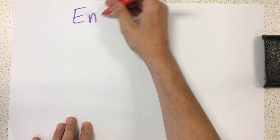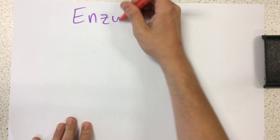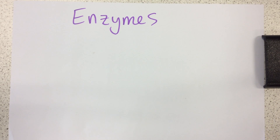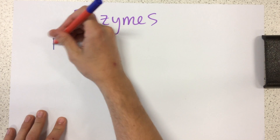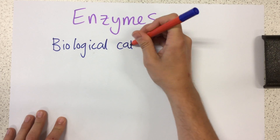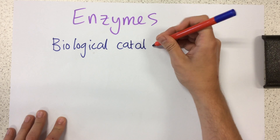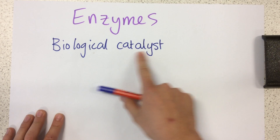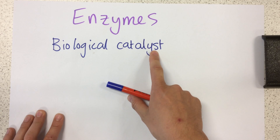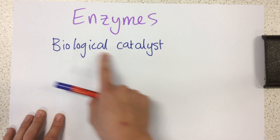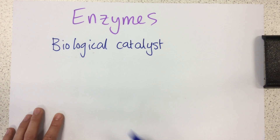Today we're going to talk about enzymes. Enzymes are an example of biological catalysts. A catalyst is something which speeds up the rate of reaction without being used up itself. All 'biological' means is that we find these in living things.